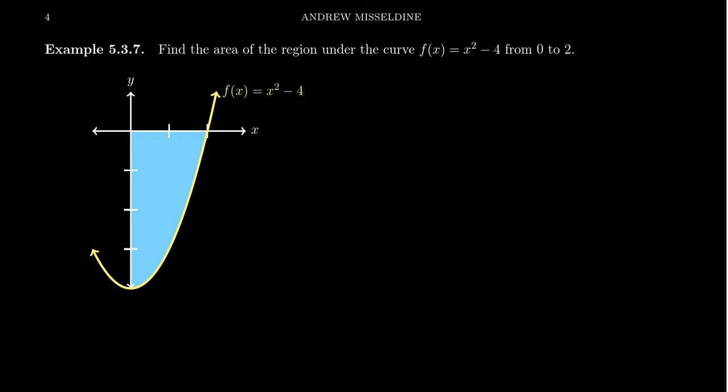So imagine we have this function f(x) = x² - 4, and we want to calculate the area from 0 to 2. You can see the illustration displayed on the slide right here.